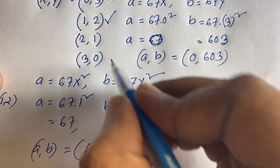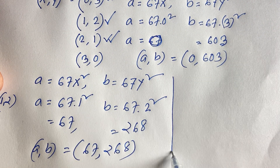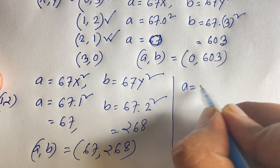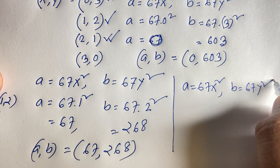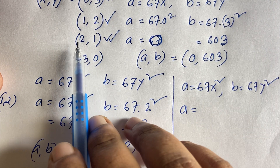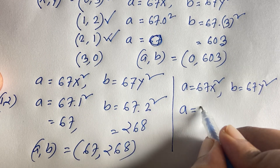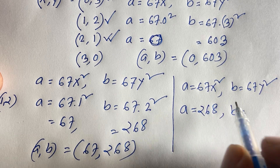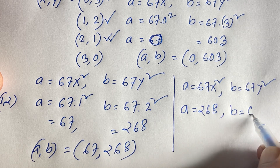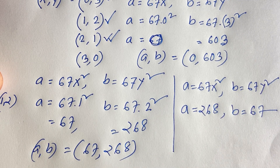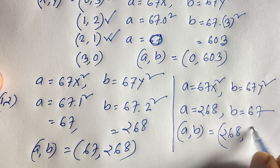For the third case, x = 2 and y = 1: a = 67 × 2² = 67 × 4 = 268, and b = 67 × 1² = 67. So (a, b) = (268, 67).